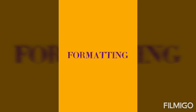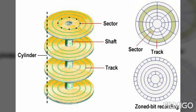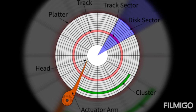But before any data can be read from or written on a hard disk, the disk must be formatted. Formatting is the process of dividing the disk into tracks and sectors so that the operating system can store and locate data and information on the disk. A track is a narrow recording band that forms a full circle on the surface of a disk. This track is then divided into smaller parts, and each part — like a slice of a cake — is known as a sector.